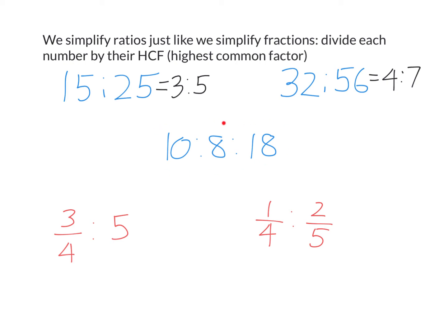We can also simplify ratios that have more than 2 numbers. Here we need to divide each number by their highest common factor. So we find the highest number that goes into 10, 8 and 18, which is actually 2. So 10 divided by 2, 8 divided by 2, and 18 divided by 2. Once again, the numbers in my answer have no common factors other than 1.